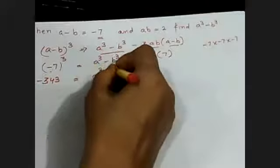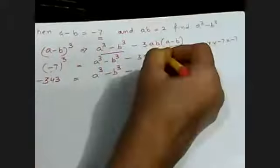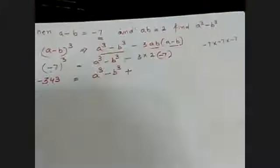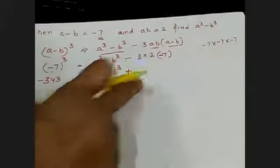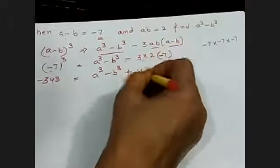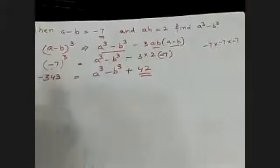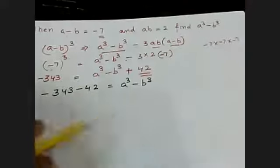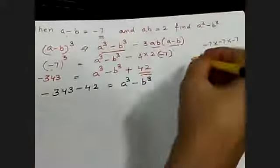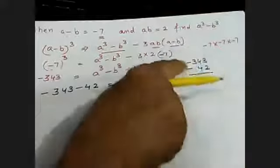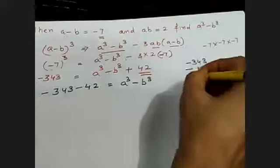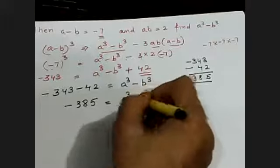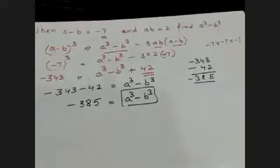You need to find A cube minus B cube. Three times 2 is 6, and A minus B is minus 7, so minus 3 times 2 times minus 7 gives plus 42. When you transpose 42 to the left-hand side it becomes minus 42. So you have minus 343 equals A cube minus B cube minus 42. Adding these two negative integers, the value of A cube minus B cube is minus 385.